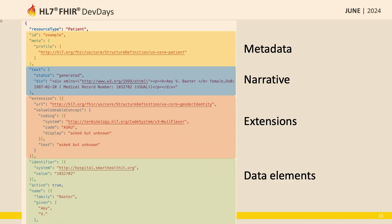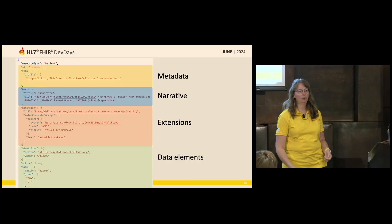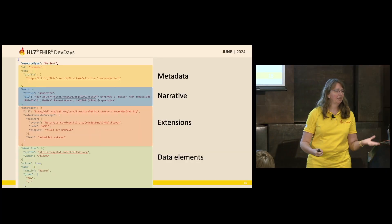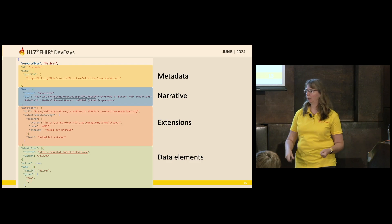The FHIR specification actually comes with examples as well. If you look at your resource type page, there is a button to find examples. Those examples are valid against the FHIR release you're looking at and are downloadable as a zip file as JSON examples or as XML examples, depending on what you want.